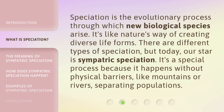Speciation is the evolutionary process through which new biological species arise — it's like nature's way of creating diverse life forms. There are different types of speciation, but today our star is Sympatric Speciation. It's a special process because it happens without physical barriers, like mountains or rivers, separating populations.